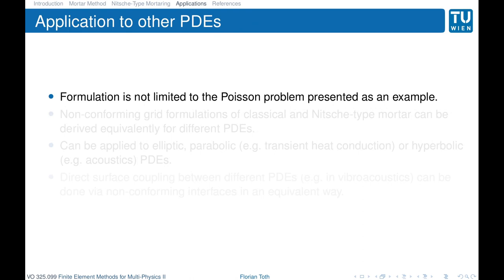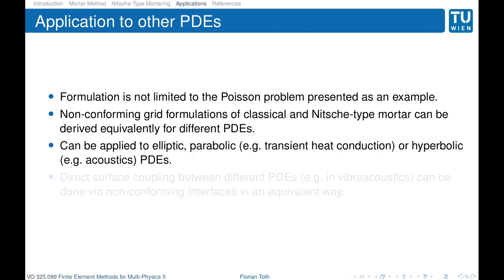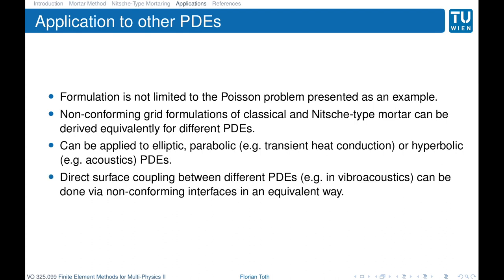We want to apply this non-conforming grid technique to other PDEs as well. In fact, the formulation shown is not limited to a specific PDE — non-conforming grid formulations, both classical and Nitsche-type mortaring, can be used equivalently for different partial differential equations. Similarly, they can be applied to elliptic, parabolic, or hyperbolic PDEs. For example, in heat conduction we have a parabolic problem; in acoustics, a hyperbolic problem. Non-conforming grids work there too. If you have direct surface coupling between different PDEs — for example in vibroacoustics between mechanics and acoustics — this can also be accomplished via a non-conforming interface.